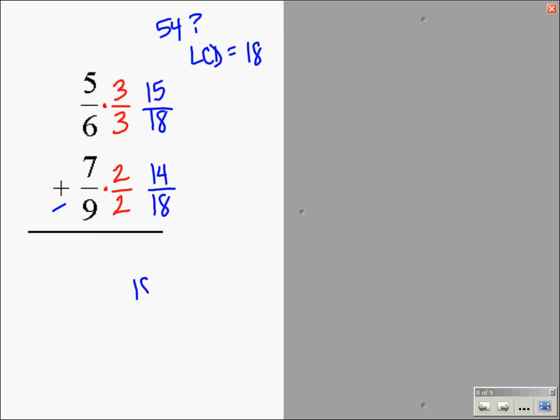Let me bring down that common denominator of 18. I'm going to add and I get 29/18. Now, since the numerator is larger than the denominator, I need to make it a mixed number.